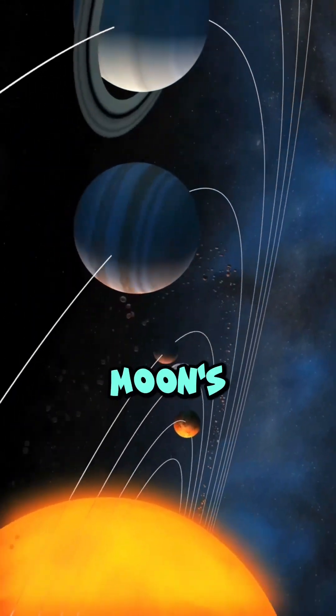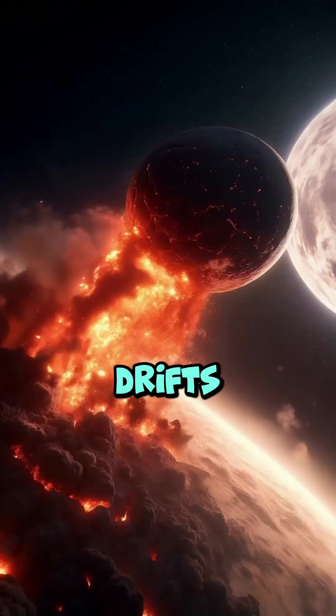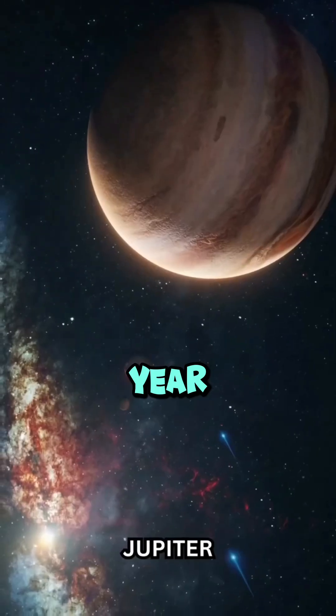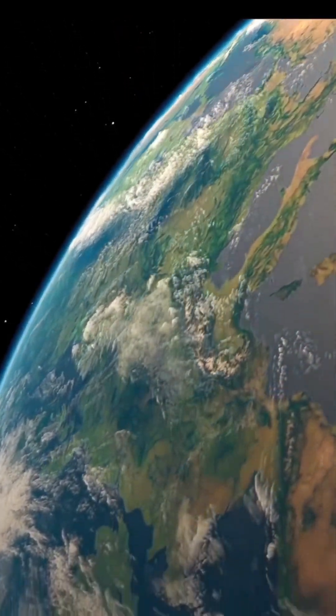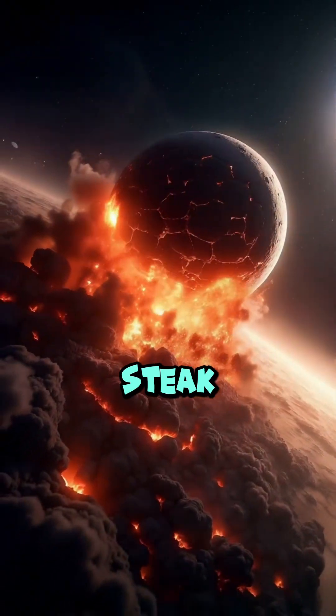Number two: the moon's leaving. It drifts 1.5 inches away every year. Number three: space smells weird. Astronauts say it smells like burnt steak.